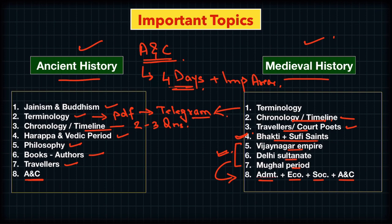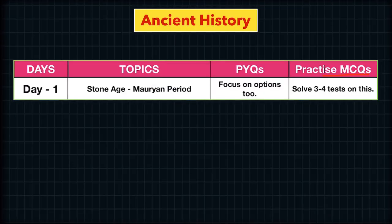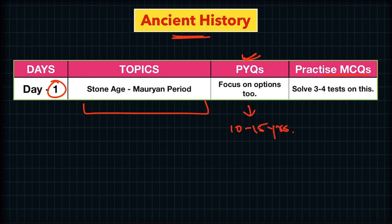Now let's go to the day-wise plan. On Day 1, you have to cover ancient history from the Stone Age to the Mauryan period. Then you have to attempt previous year questions from the last 10 to 15 years. I have analyzed that a question from 2013 was asked in exactly the same or similar form in 2020 and 2021 as well.